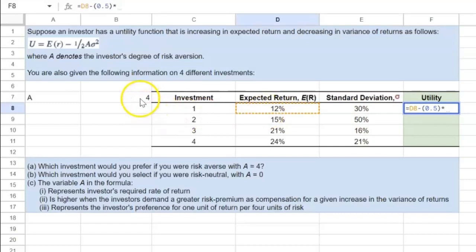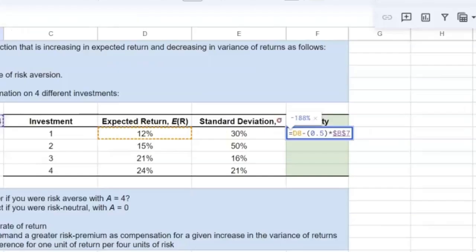multiplied by the magnitude of A. And I'm going to lock this cell reference because I don't want to move from this. And then I'm going to multiply this by the standard deviation, but I want to square it. So I'm going to raise this to the power two.